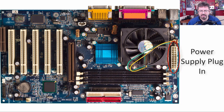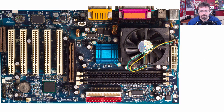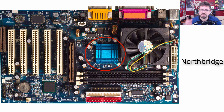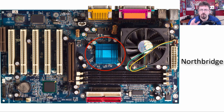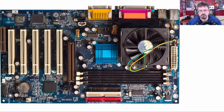Over here we have the power supply plug-in — this is where you plug in the main connector to power the motherboard. Over here we have another heat sink, and underneath this heat sink is the Northbridge. We'll talk about chipsets, Northbridge, and Southbridge in other lessons in this series. Just know right now that that is the heat sink over the Northbridge, which means there must be a processor underneath.